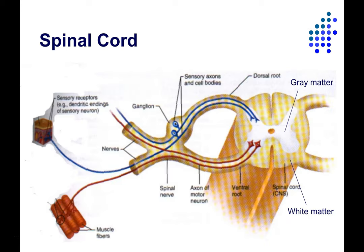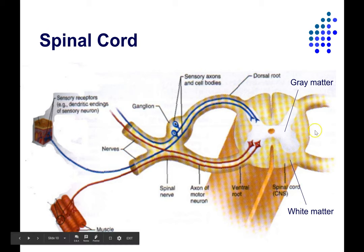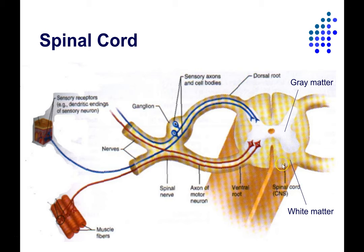Let's focus on the central nervous system, starting with the spinal cord. Inside the spinal cord, the organization of white matter and gray matter is different than in the brain. In the brain, the cerebral cortex — that thin sheet of gray matter — surrounds the outside, with white matter on the inside. In the spinal cord, it's organized differently: the white matter, shown in yellow-white hatching here, is on the outside — axons traveling up and down carrying information between the body and the brain.